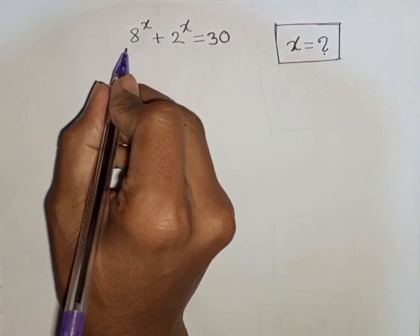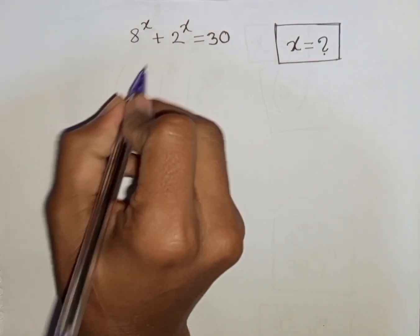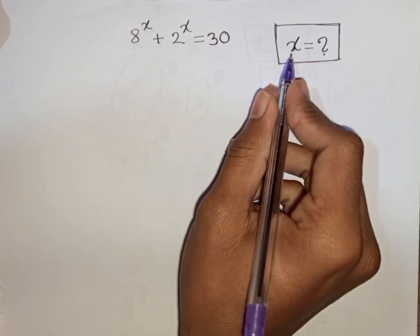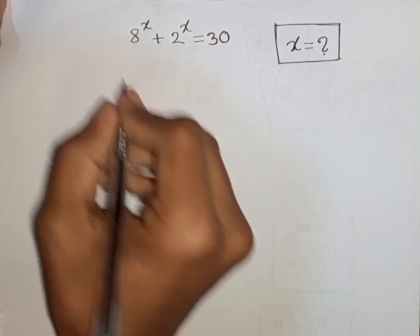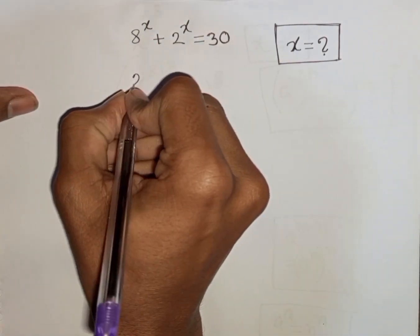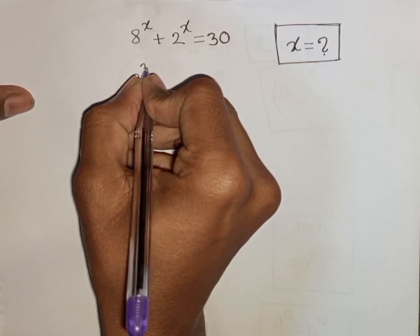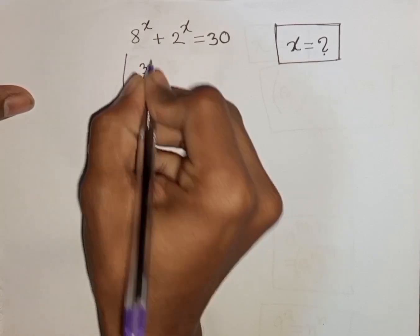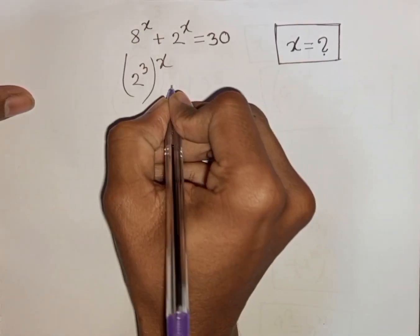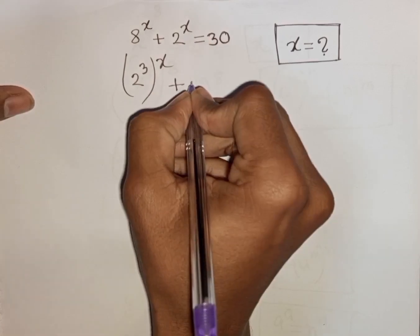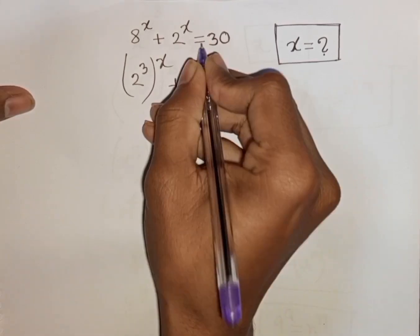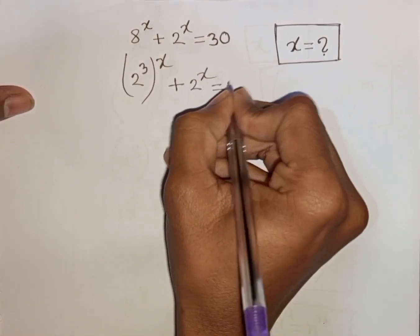How to solve 8 power x plus 2 power x is equal to 30. Find the value of x. We have 8 power x, which is the same as 2 power 3 bracket power of x, plus 2 power x is equal to 30.